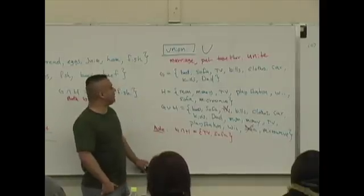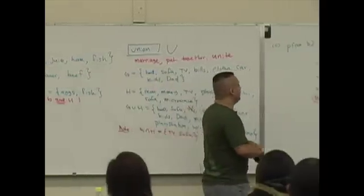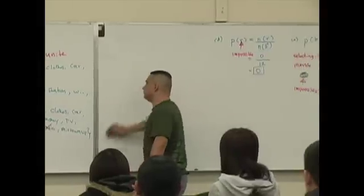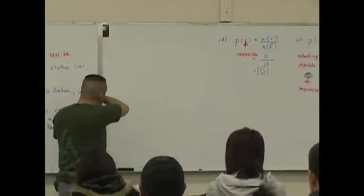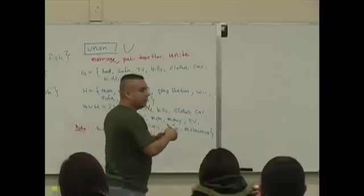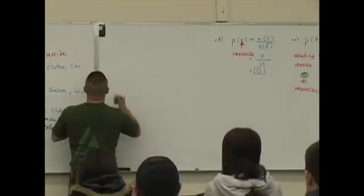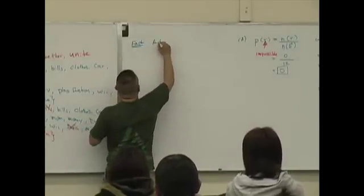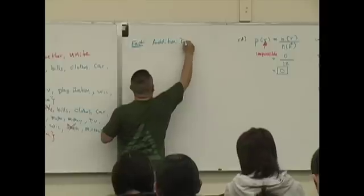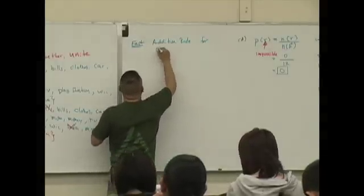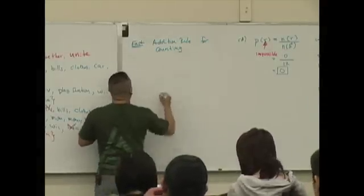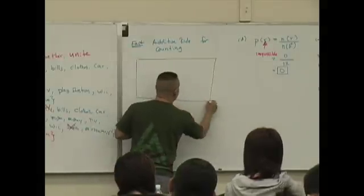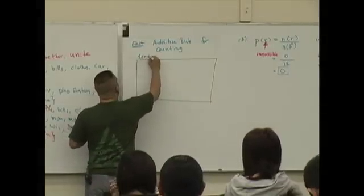What in the world does this have to do with marbles? Well, let's see. Here's a fact. This is known as the addition rule for counting. It's the addition rule for counting, and I'm going to show you something here by using what's known as a Venn diagram.